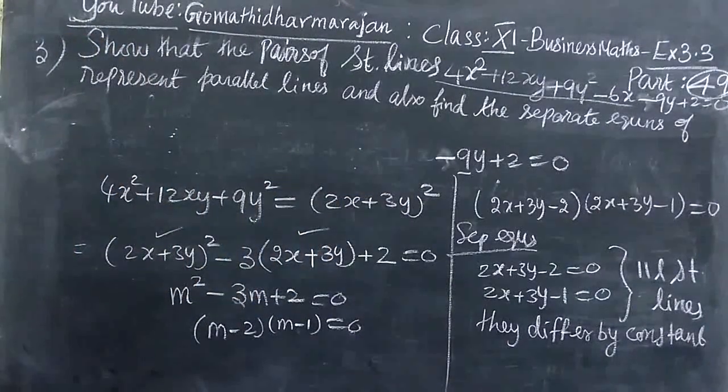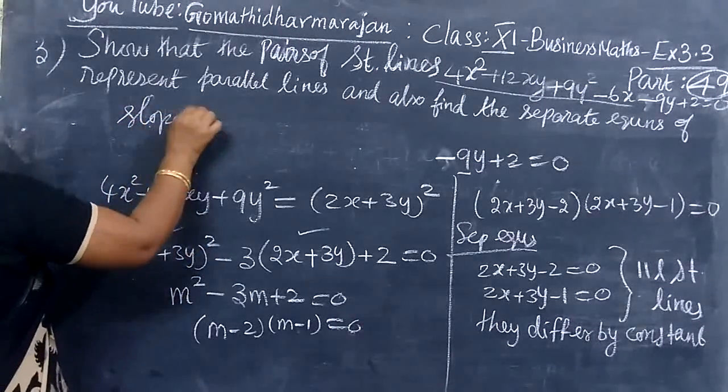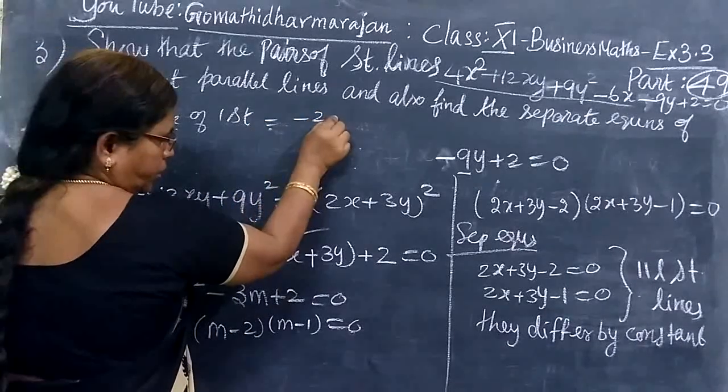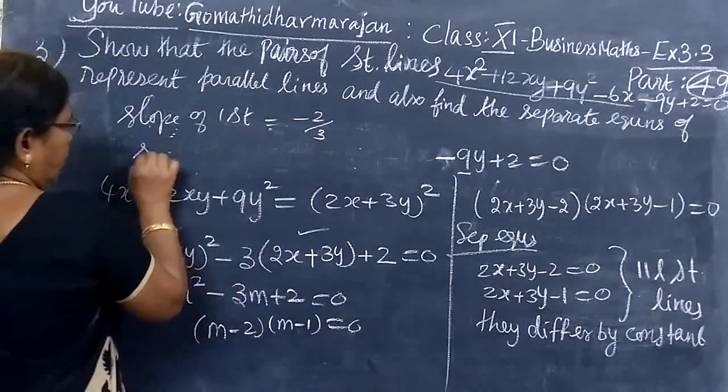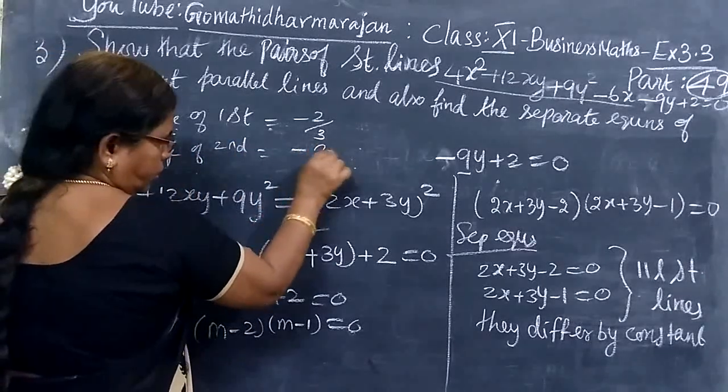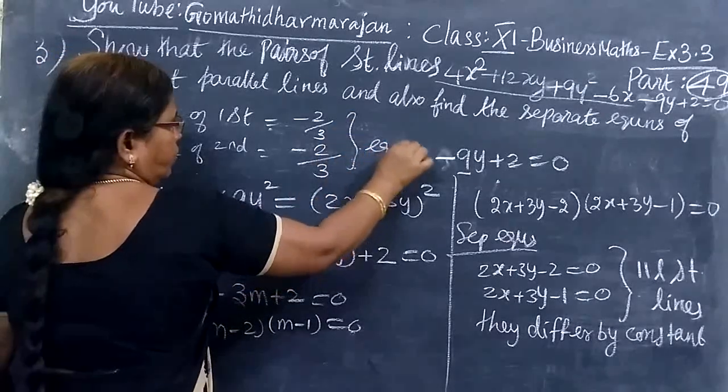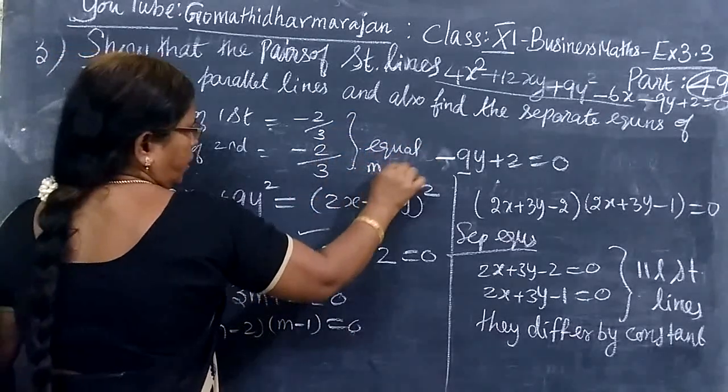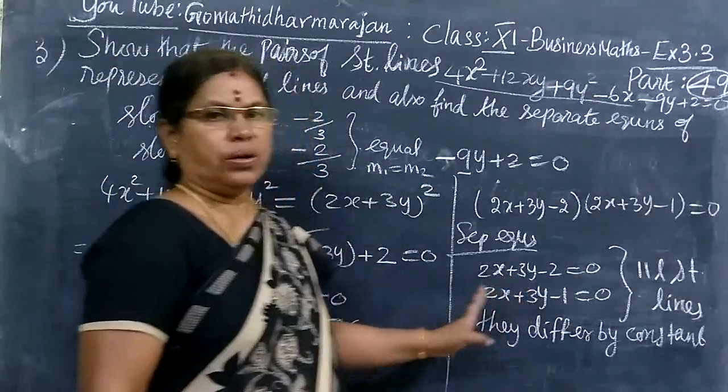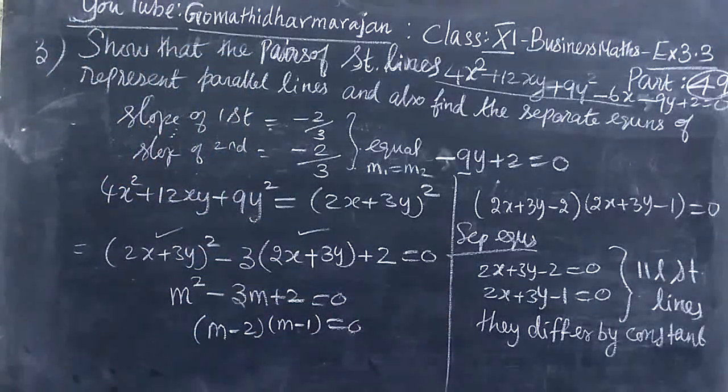The slope of the first line is -x coefficient by y coefficient, and the slope of the second one is also -x coefficient by y coefficient. So both slopes are equal, M₁ = M₂. Therefore, by definition, they are parallel lines.